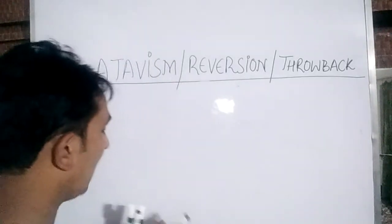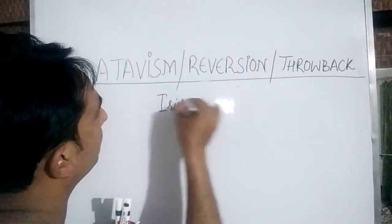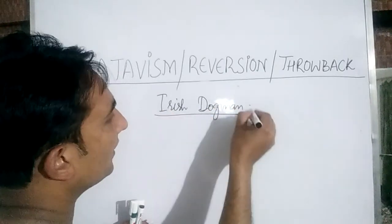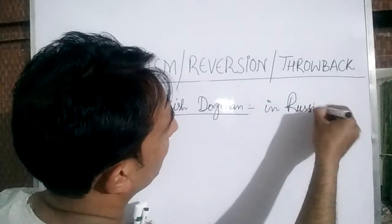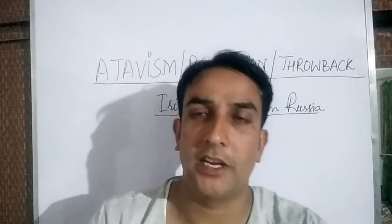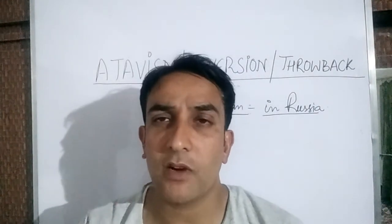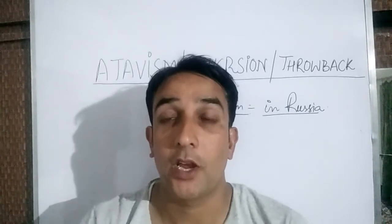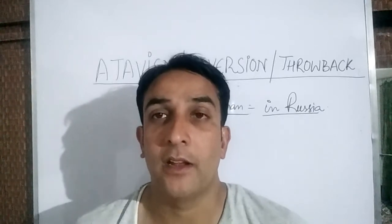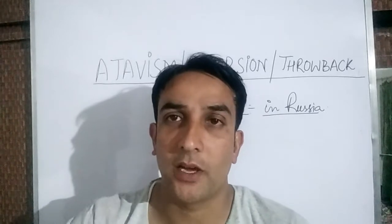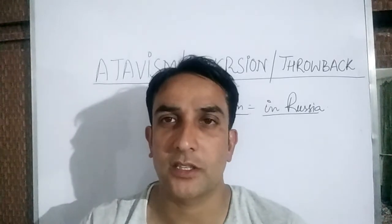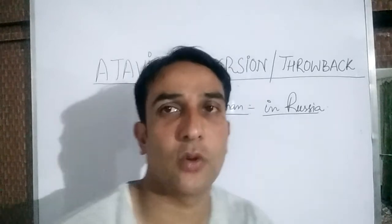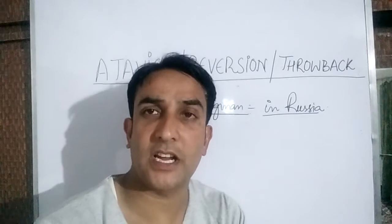Another example is that of the Irish Dog Man. In Russia, a human baby was born with profuse development of hair covering the whole body, just like that of the apes. At present, humans are covered with only scanty, soft body hair, but the Irish Dog Man was born with profuse body hair throughout. It is believed that ancestors of humans used to possess body hair throughout, and this reappearance is atavism.